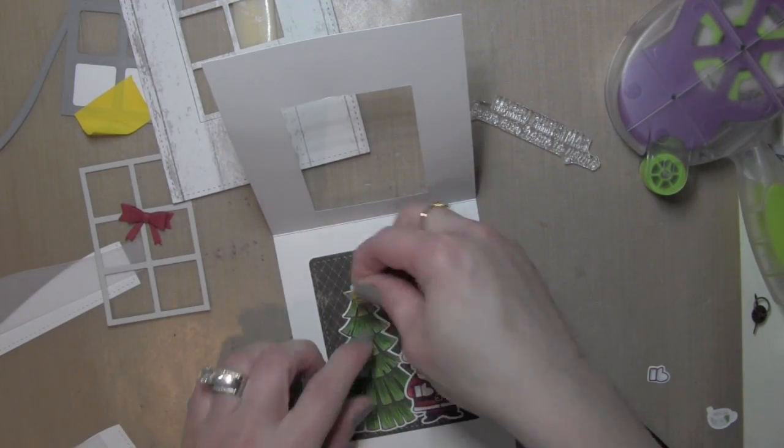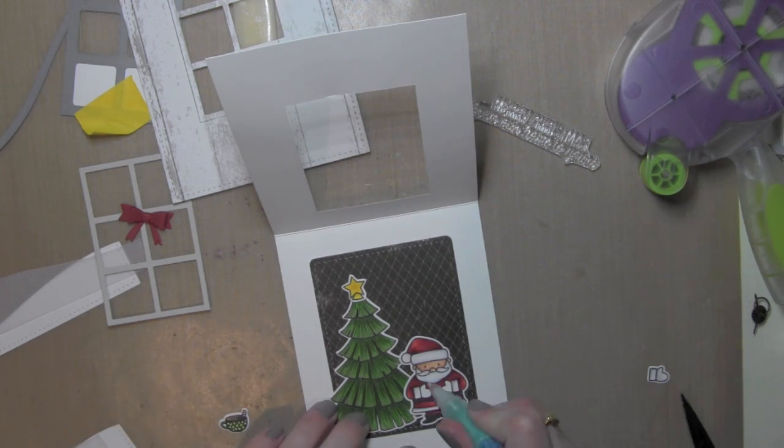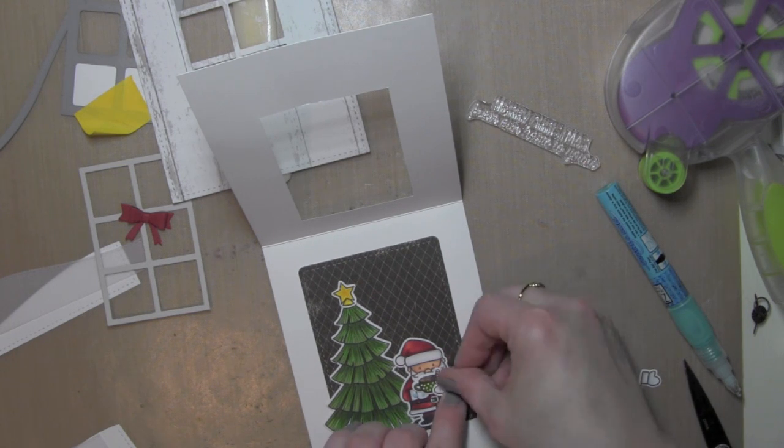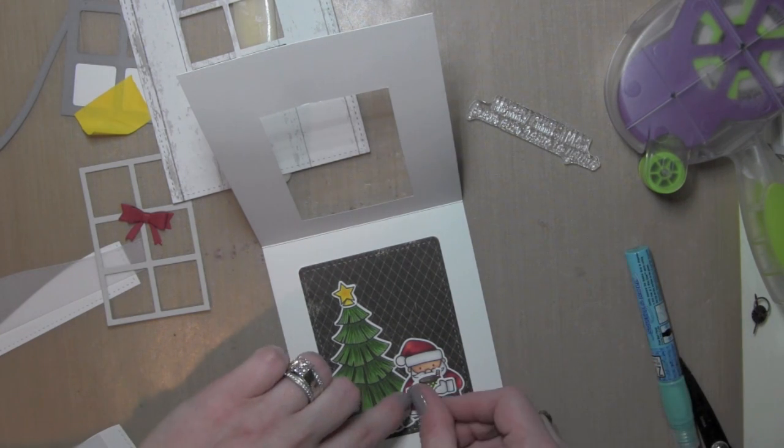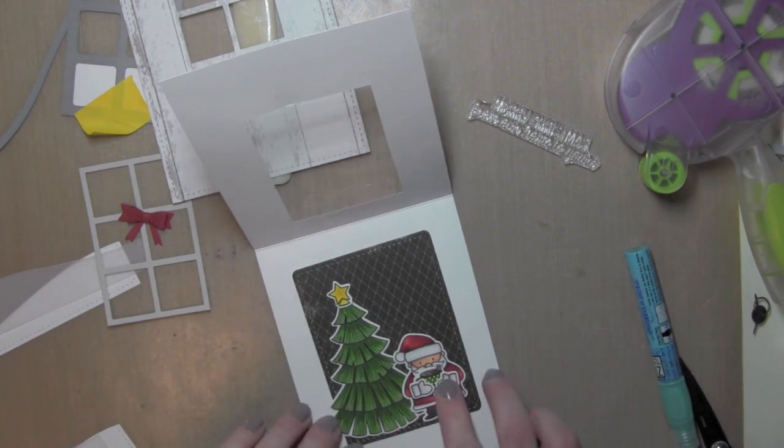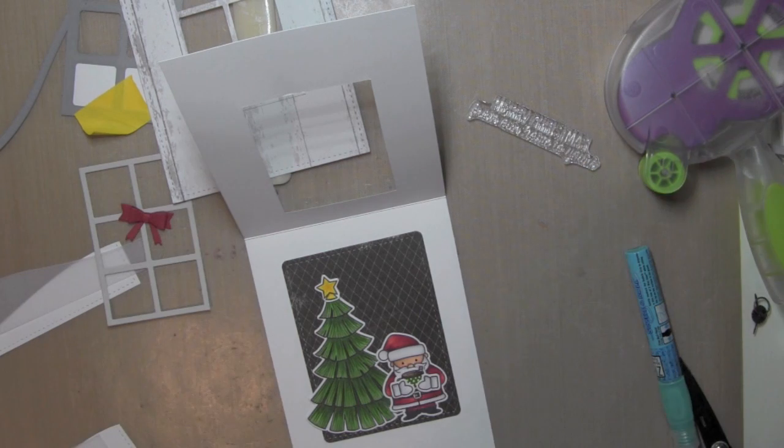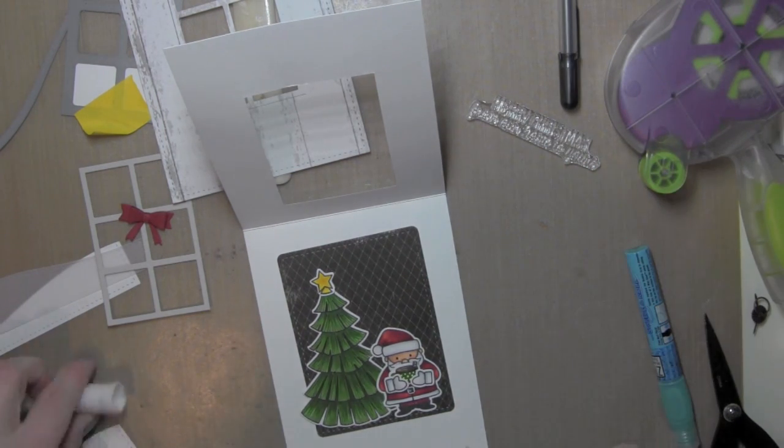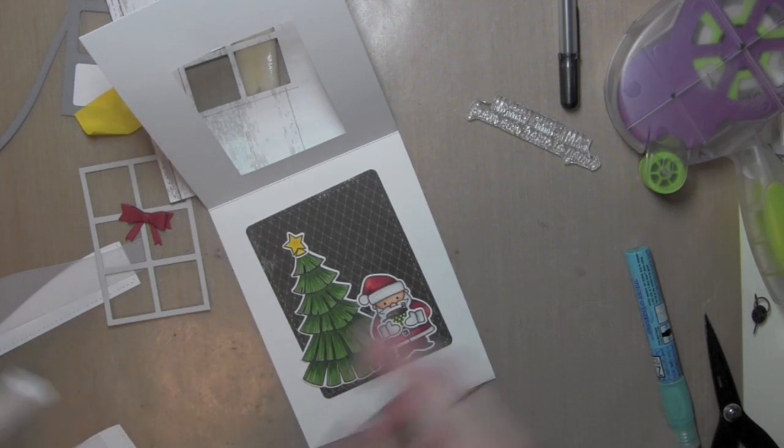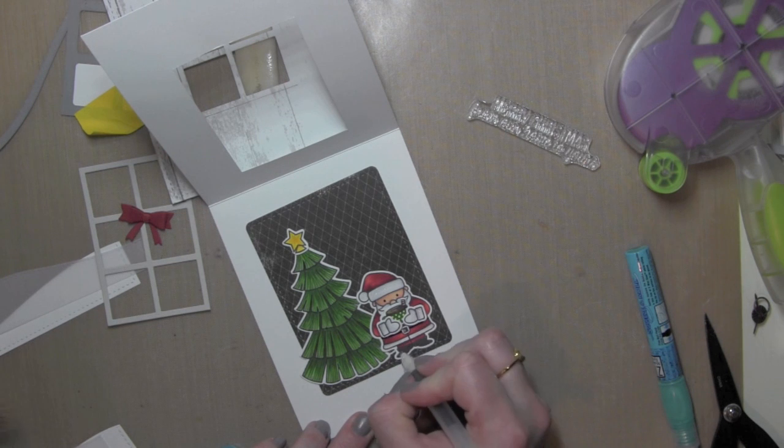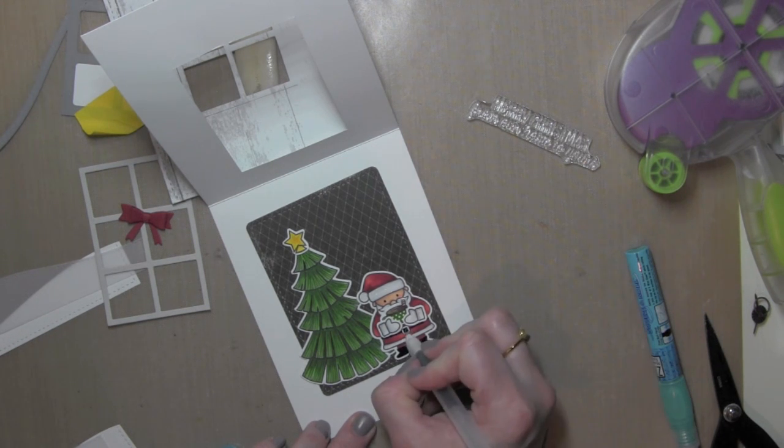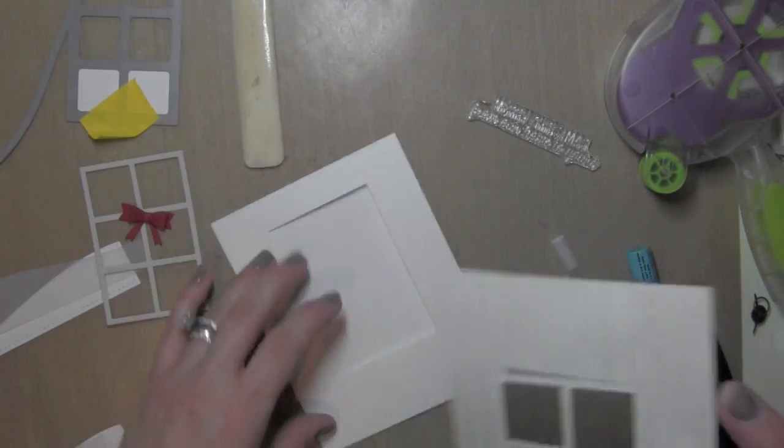Once that is exactly where it needs to go I'll go ahead and position my star and I'll place the hot chocolate mug in Santa's hands and glue his hands in place. I wanted to distinguish the little ball on his hat and the brim of his hat and the cuffs on his jacket from his beard, and to do that I added some clear Wink of Stella glitter pen to those areas. I used the Sakura black gel pen to color in his belt and his shoes to add some interest.